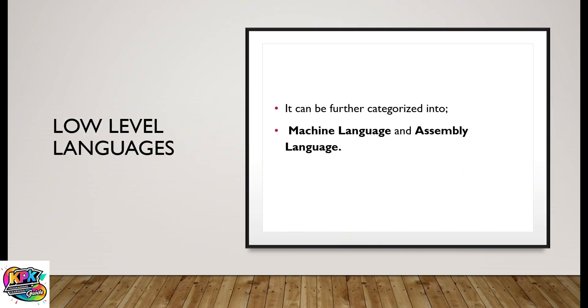Low-level programming languages can be further categorized into two types: machine language and assembly language.